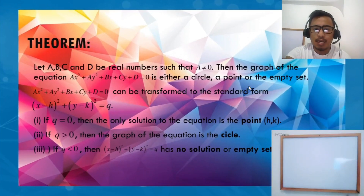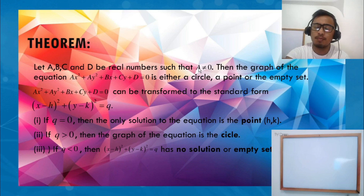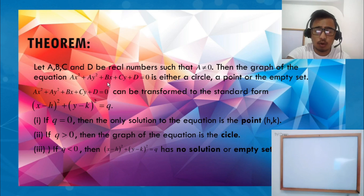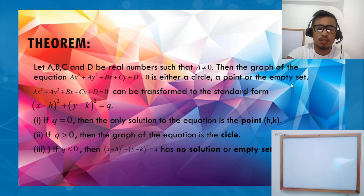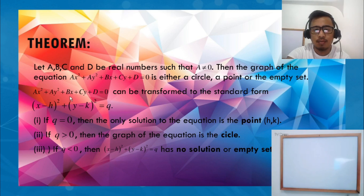Let A, B, C, and D be real numbers such that A is not 0. Then the graph of this equation — AX² plus AY² plus BX plus CY plus D equals 0 — is either a circle, a point, or the empty set. To determine which, we will rewrite this general equation into standard form.